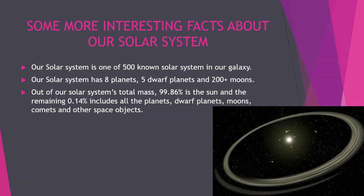Even this time I have them: out of our solar system's total mass, 99.86 percent is just and only of our sun, and the remaining 0.14 percent includes these planets, dwarf planets, and moons.